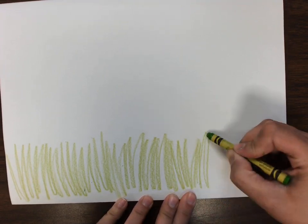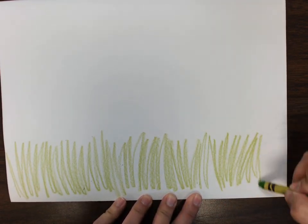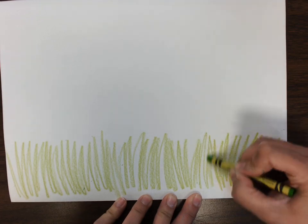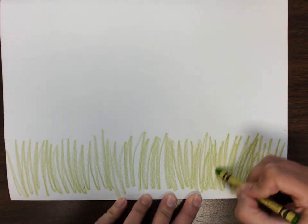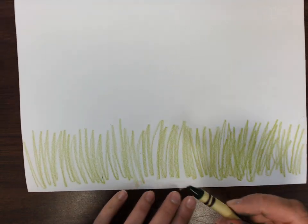You can see I've already started my grass with a light green crayon. I'm just doing big tall scribbling with a light green.